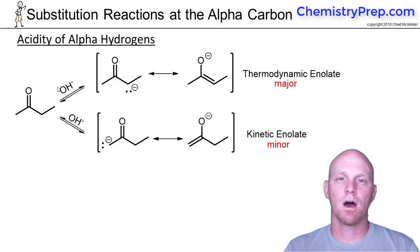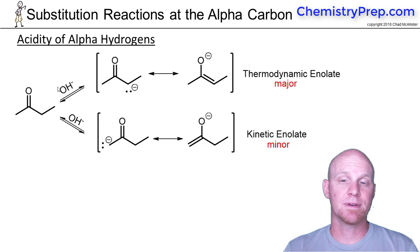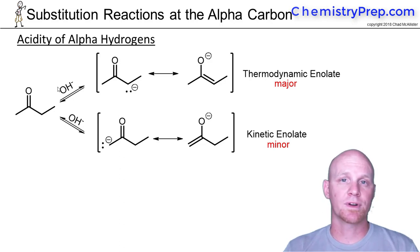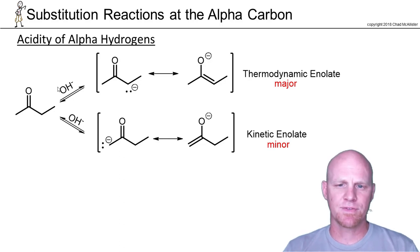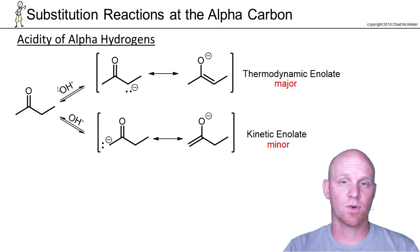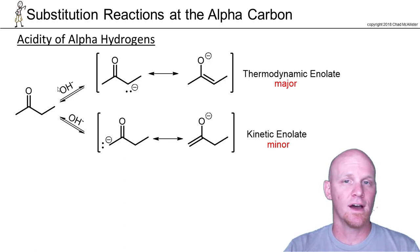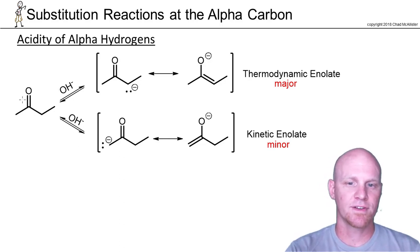We've spent two chapters on how carbonyl functional groups can be electrophiles, and this is the chapter where we'll see they can be nucleophiles as well. It really all revolves around the alpha carbon. It turns out the alpha carbon is quite a bit more acidic than a regular alkane carbon, and we'll see it's due to resonance. So let's talk about what alpha means first.